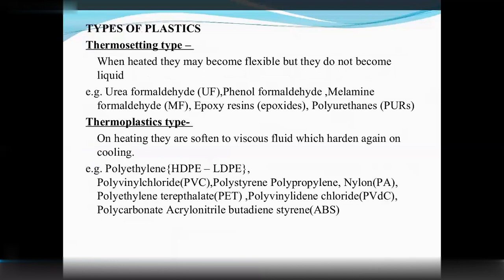Types of plastic: thermosetting plastics and thermoplastics. Thermosetting plastics, when heated, become more flexible but do not become liquid. Examples include urea formaldehyde, phenol formaldehyde, melamine formaldehyde, epoxy resins, and polyurethanes.